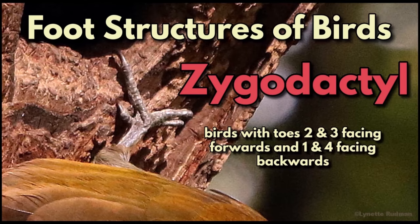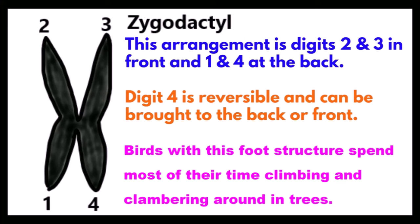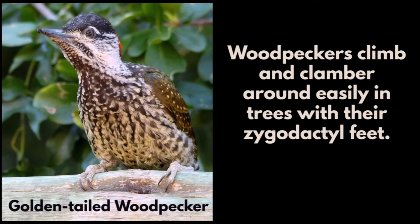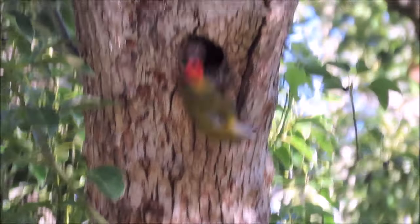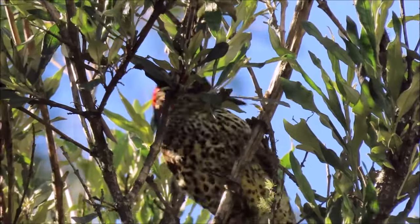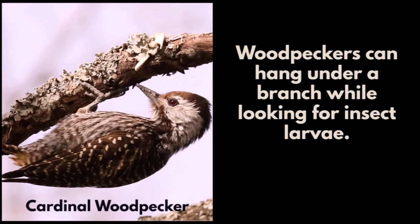Zygodactyl: birds with toes two and three facing forwards and one and four facing backwards. Digit four is sometimes reversible in some birds and can be brought to the back or front. Birds with this foot structure spend most of their time climbing and clambering around in trees. This is the second most common toe arrangement in birds after anisodactyl. Woodpeckers climb and clamber around easily in trees with their zygodactyl feet and can hang under a branch while looking for insect larvae.